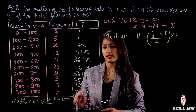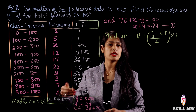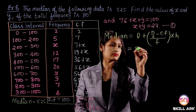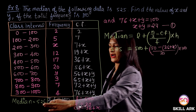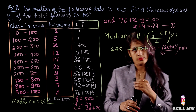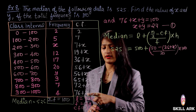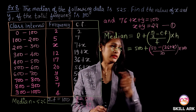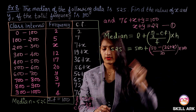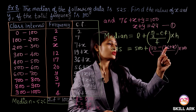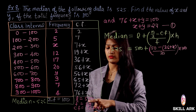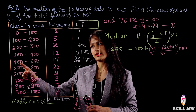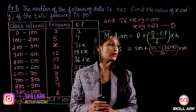N/2 = 100/2 = 50. H = class width = 600 − 500 = 100. Substituting into the median formula: 525 = 500 + (50 − (36 + x)) / 20 × 100. Simplifying: 525 = 500 + (14 − x) × 5. So 25 = 5(14 − x), giving 5 = 14 − x.